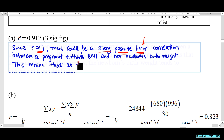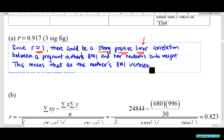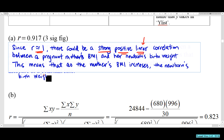As the mother's BMI increases, the newborn's birth weight tends to increase at a constant rate.